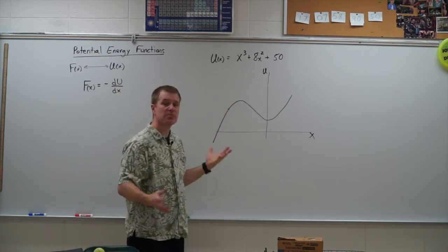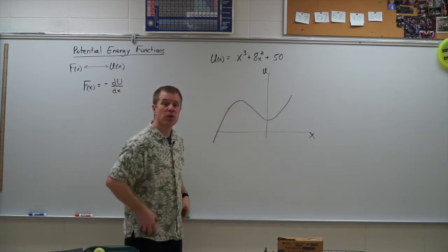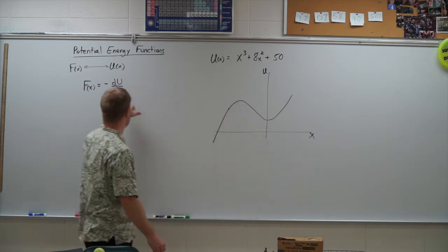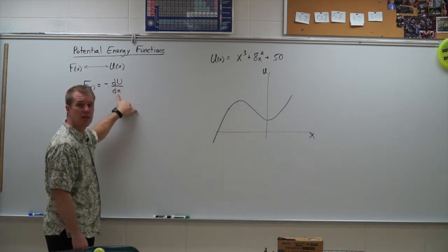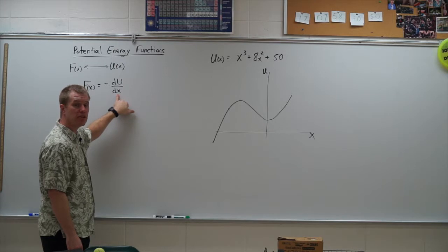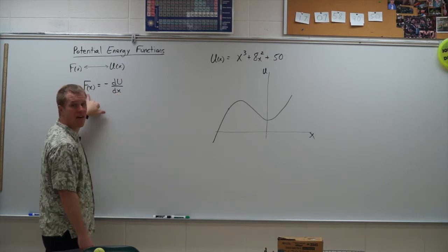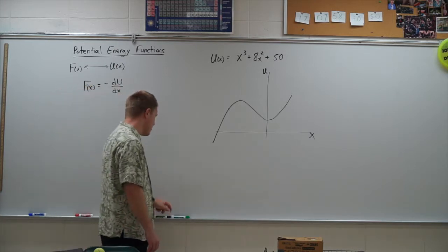And so we're going to talk about what that means for those two points, our maxes and our mins of potential energy, which we call an equilibrium point, because maxes and mins of this tell us our derivative of our potential energy is zero, so our force is zero at that point.